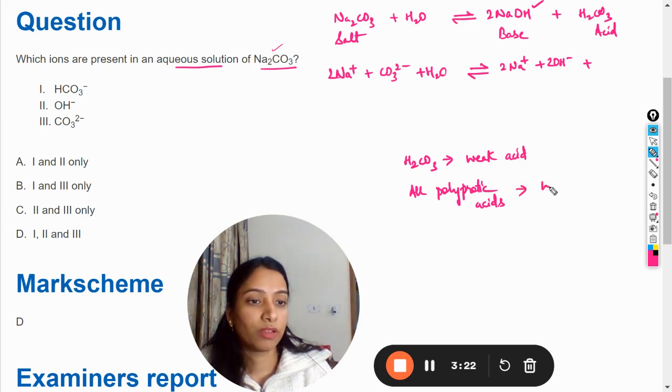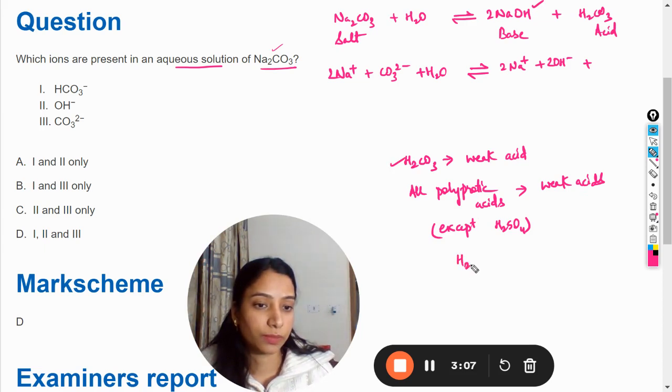acids are weak acids except H2SO4. Now why are these polyprotic acids weak acids? Let's say here this H2CO3 is present. Firstly it has two protons to donate. It will donate its one proton and produce HCO3⁻. Again, this HCO3⁻ further